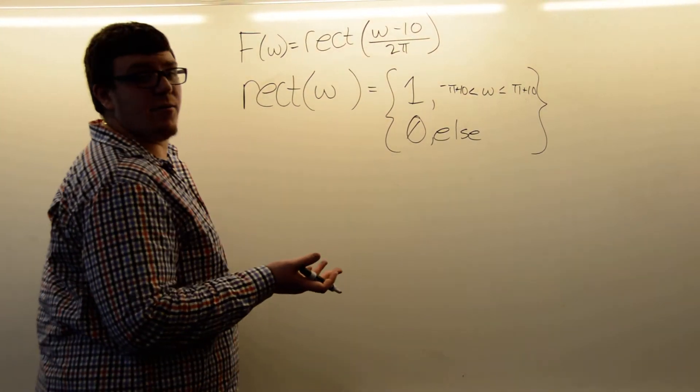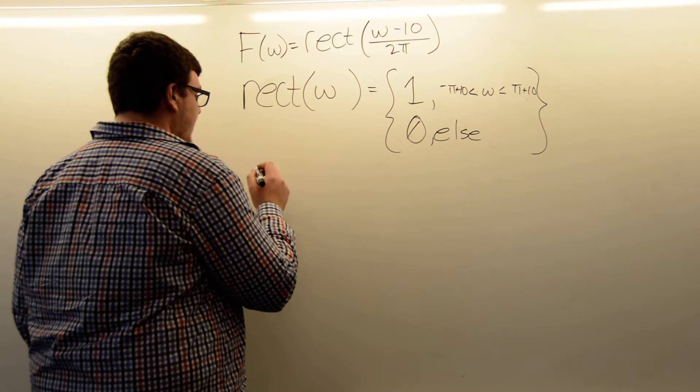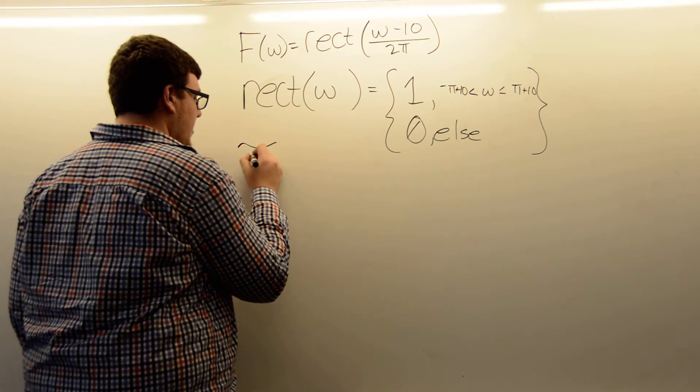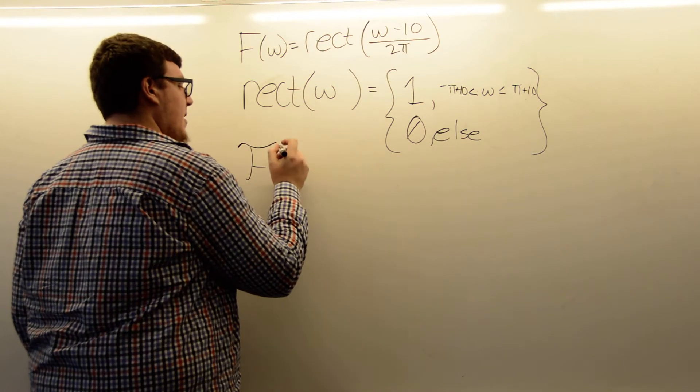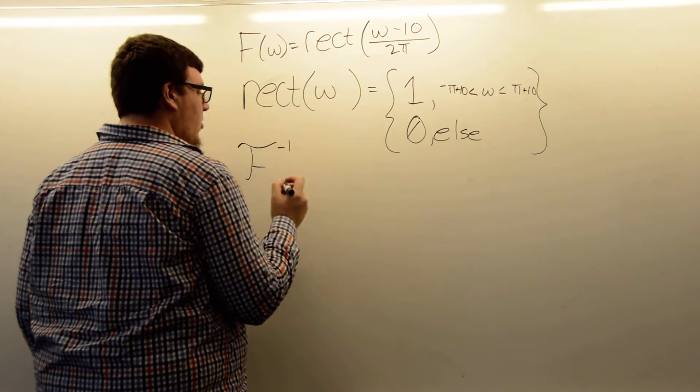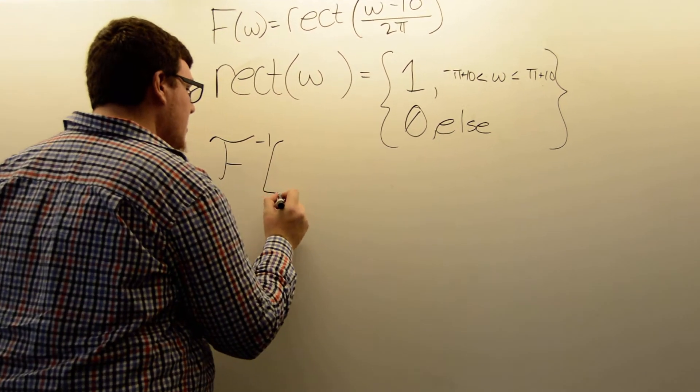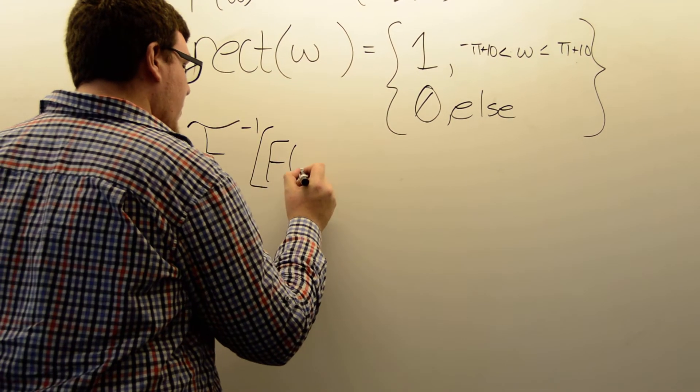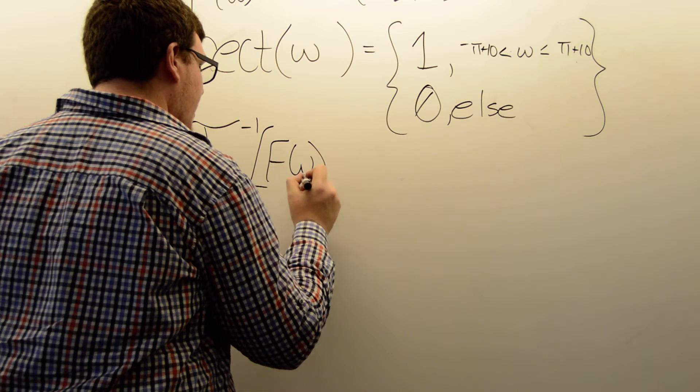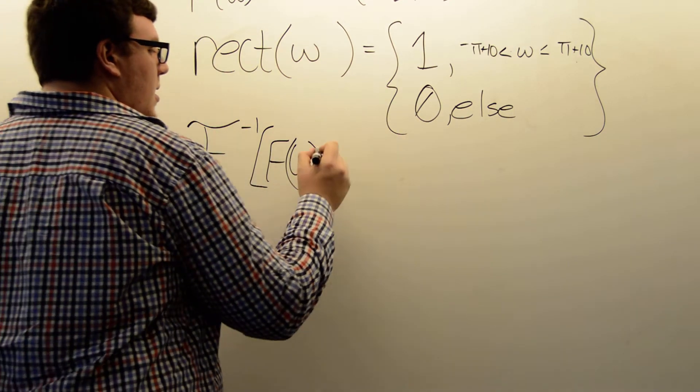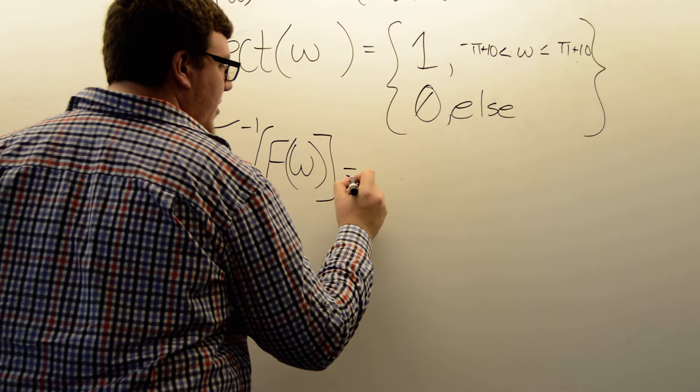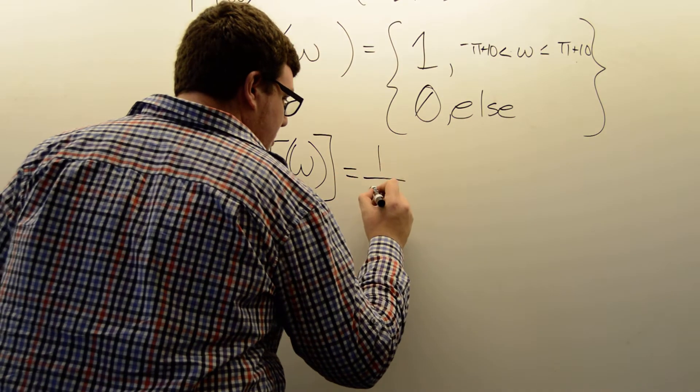So now that we have an idea of what this function is, we can take the inverse Fourier transform. This little fancy F is how I denote the Fourier transform and the negative 1 means inverse. So the inverse Fourier transform of our F of ω can be calculated using the formula 1 over 2π,